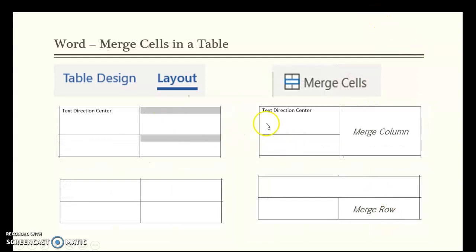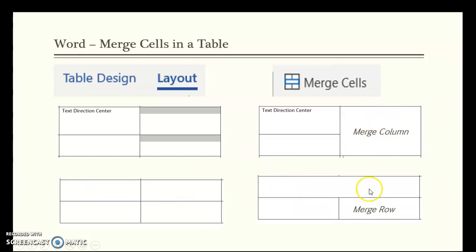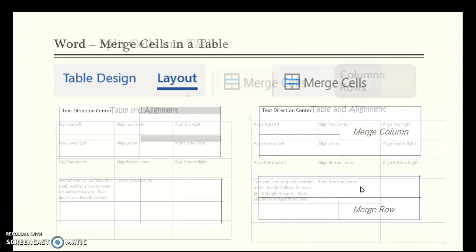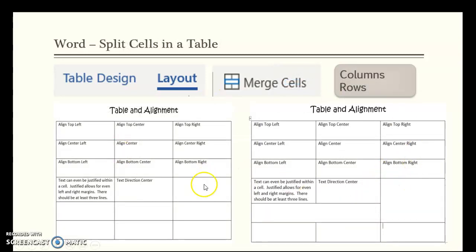Merging cells works by holding and dragging to select two separate cells, then merging them into one. You can merge within a column or across two rows. For example: two separate cells in one column were joined together, and two separate cells across two columns were also merged into one.